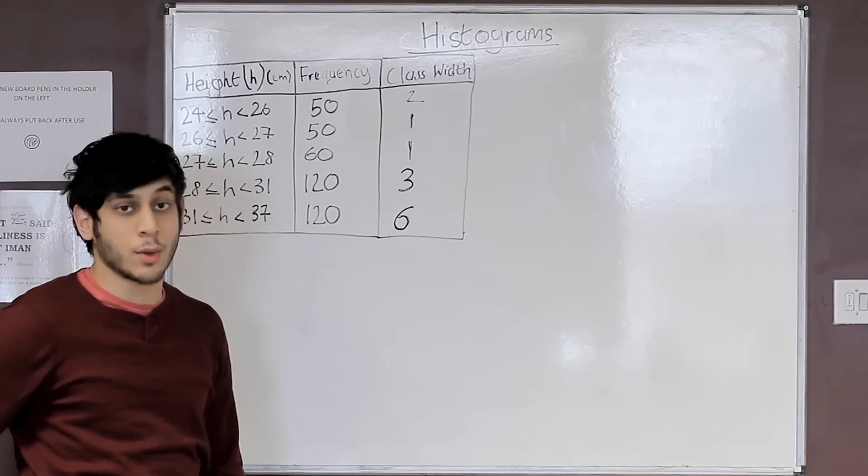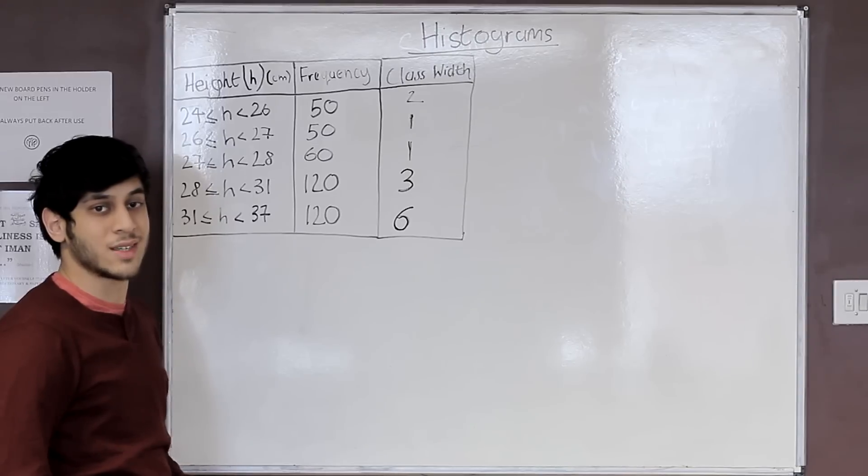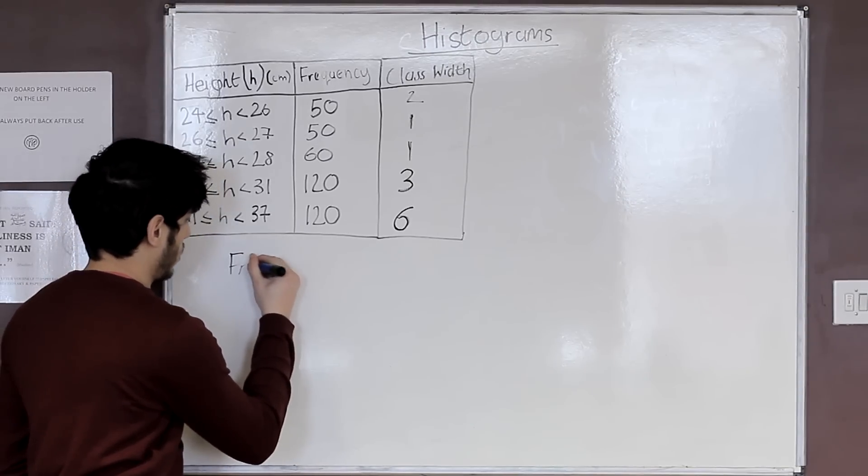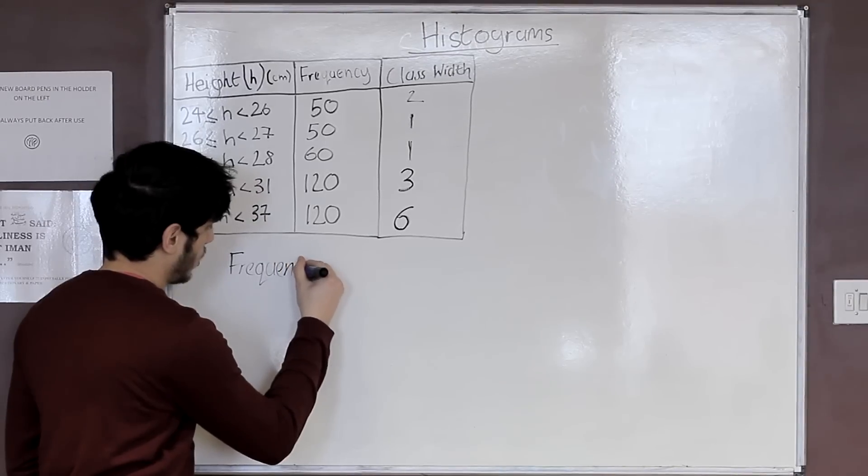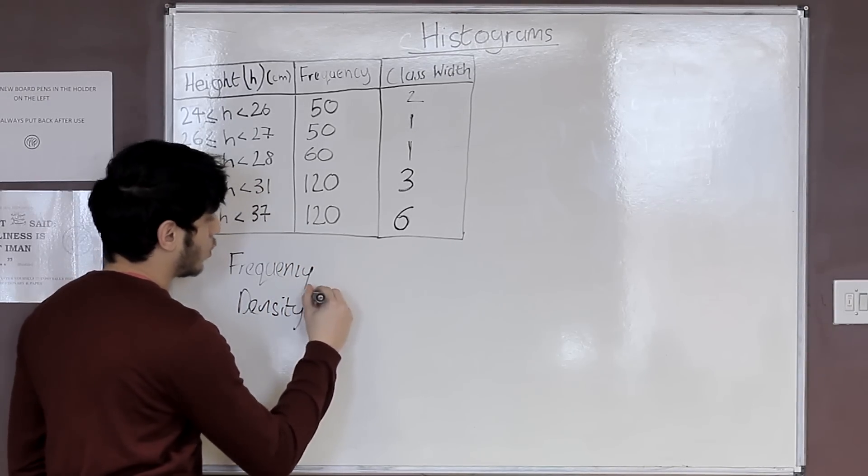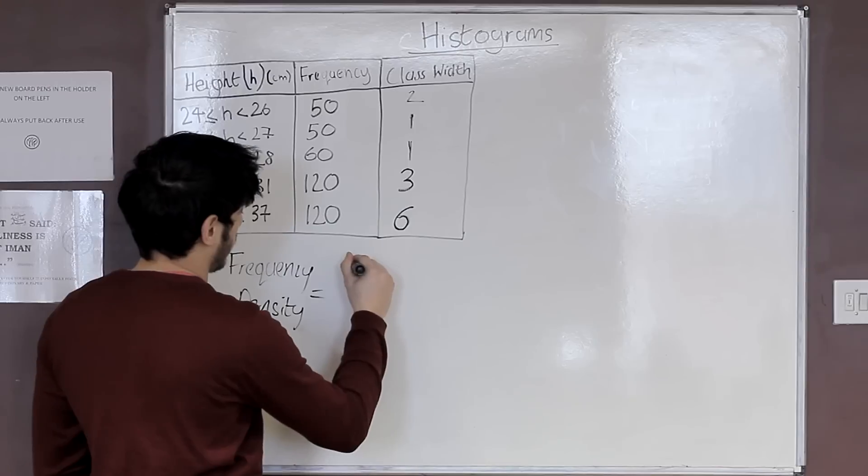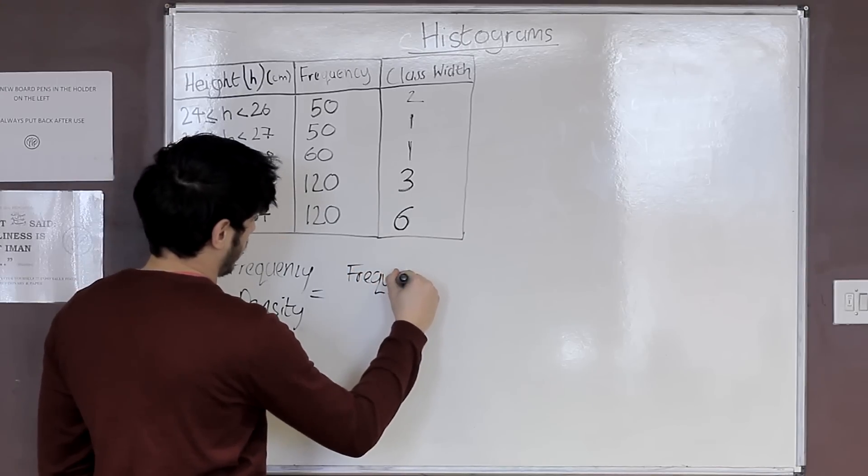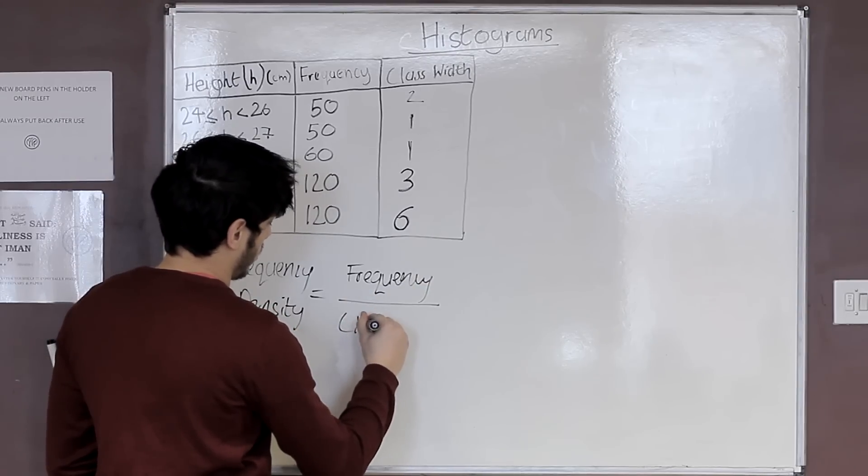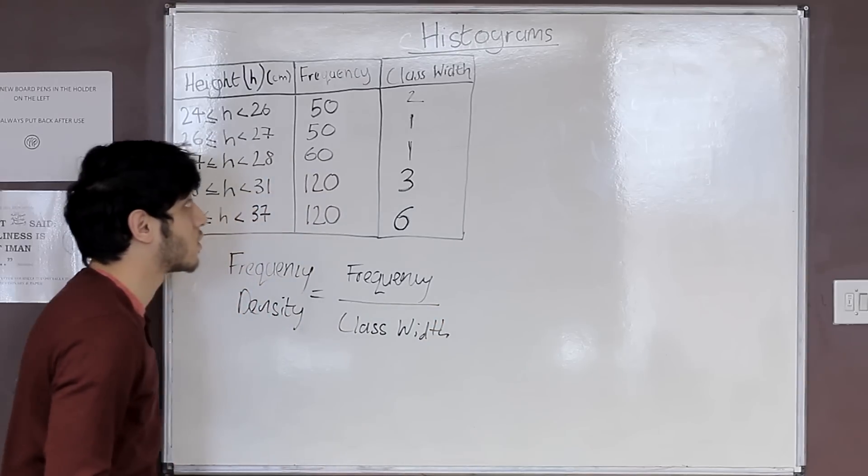Now that we've found our class width the next thing we need to find is the frequency density. To find the frequency density the formula is frequency density equals our frequency divided by class width. That's going to be our next column.